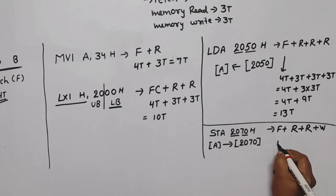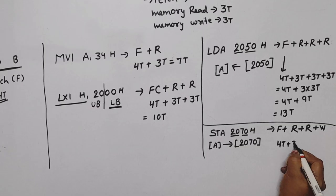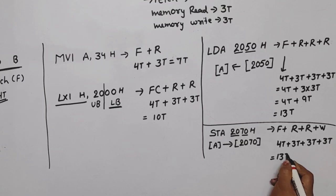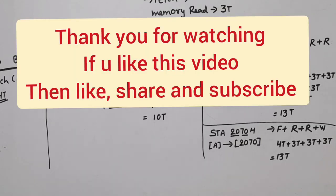So number of T: 4T for fetch, 3T for first read, 3T for second read, and 3T for write. Total is 13T. So I think you have to understand how we can find number of T for particular instruction.